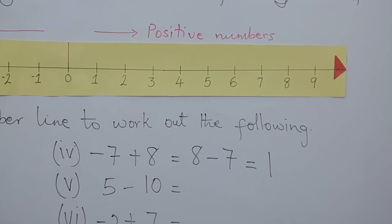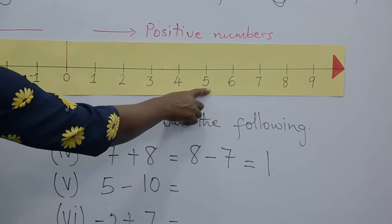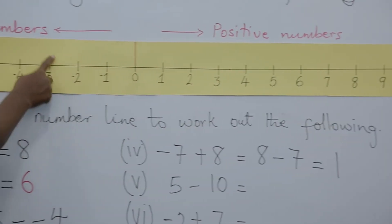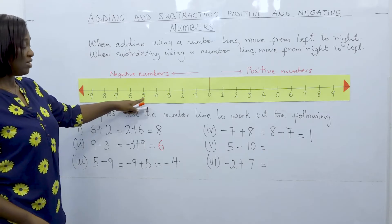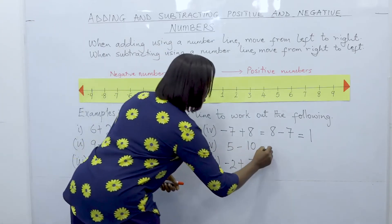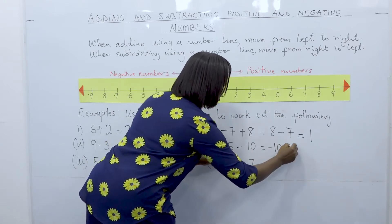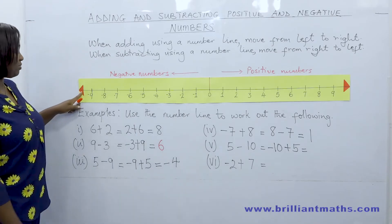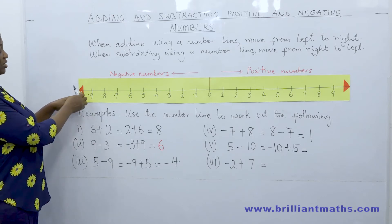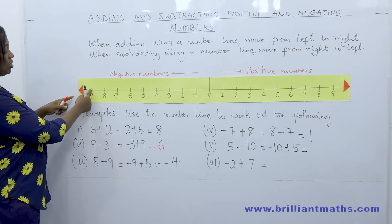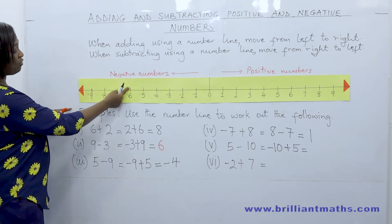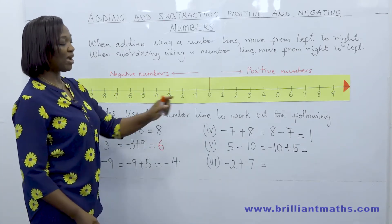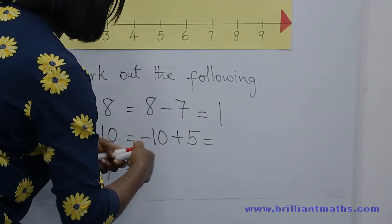Five take away ten, or five minus ten. Starting at five and taking away ten steps to the left: one, two, three, four, five, six, seven, eight, nine, ten — the answer is minus five. Would that be the same as minus ten plus five? Starting at minus ten — one step to minus nine, then two, three, four, five. Our answer again is minus five. So five minus ten, or minus ten plus five, equals minus five.